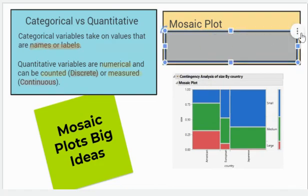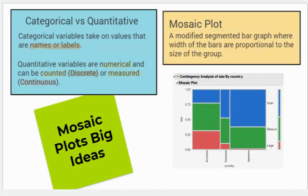But what can we say about mosaic plots? Well, a mosaic plot is a modified segmented bar graph where the width of the bars is proportional to the size of the group, just like we have down here.